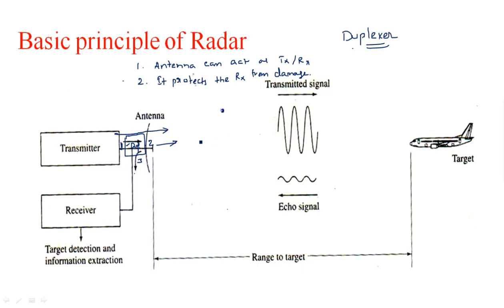During reception, the received signal enters through port two. From port two, it goes to the succeeding port — port three — and is sent to the receiving section. The duplexer is designed so that input from port one reaches port two, and no power enters from port three during transmission.